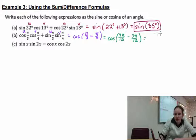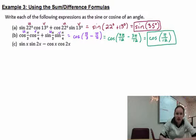We're subtracting, which means that we get cosine of pi over 12. And that's our answer because we don't have that value on our unit circle. We just leave it alone.